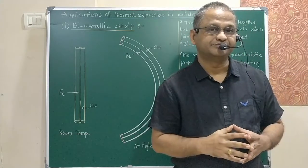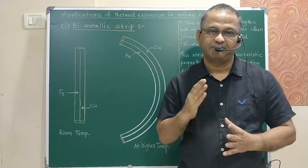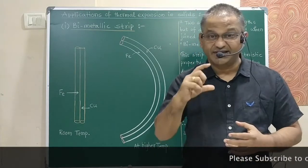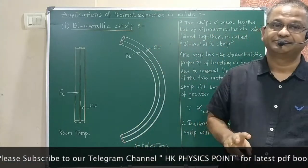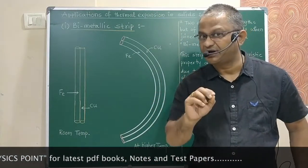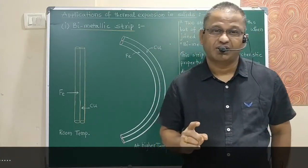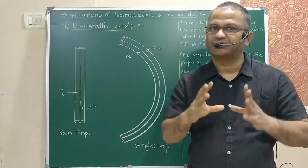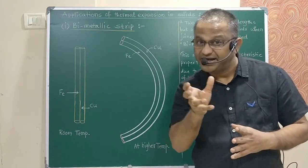Application number one is the bimetallic strip. 'Bi' means two, so a strip is made of two different metals. If two different metals are joined, both have different alpha — that is, different coefficients of linear expansion. So if alpha is different, the expansion of both will also be different when the strip is heated. As a result, the bimetallic strip will bend because of unequal expansion.